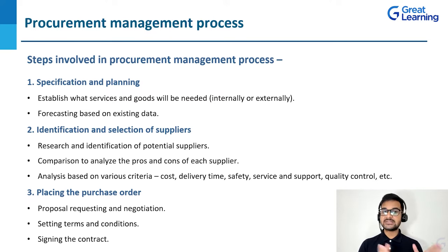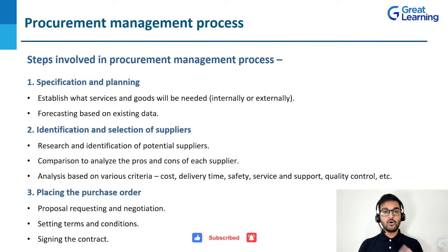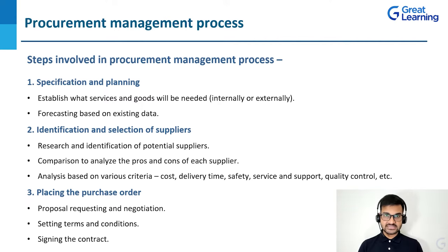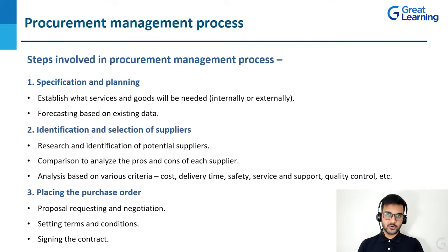The very first step is specification and planning — establishing what services and goods you will be requiring, whether you can get them internally or externally. You identify if you need a third-party vendor. Then you determine the specifications of that product. For example, in the construction industry, you might determine that for a particular project you require a certain number of bricks of a specific grade. You also forecast based on existing data — if you have done a similar project before, you can forecast the requirements and plan accordingly.